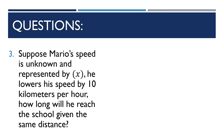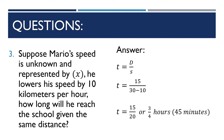Question 3: Suppose Mario's speed is unknown and represented by X, and he lowers his speed by 10 km/h. How long will it take him to reach school over the same distance? Using T = D/S with distance 15 and speed reduced by 10 to 20, T = 15/20 = 3/4 hour, or 45 minutes.